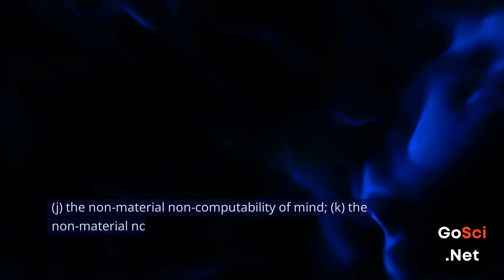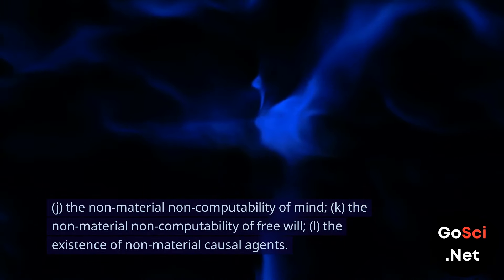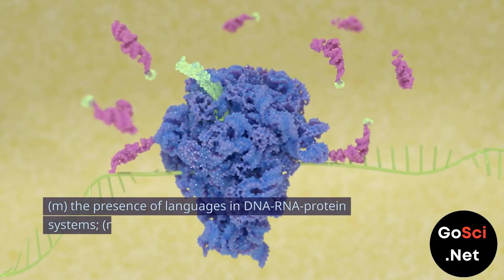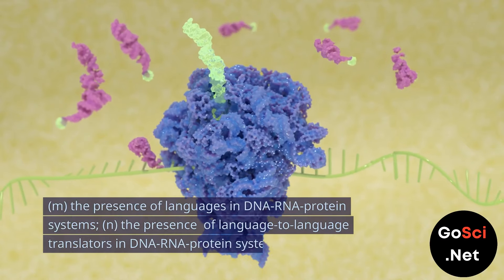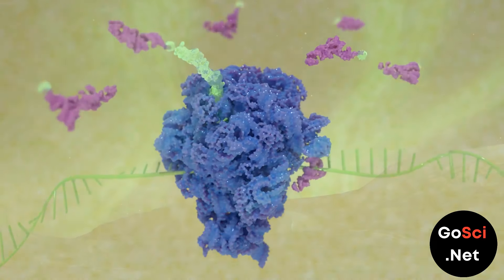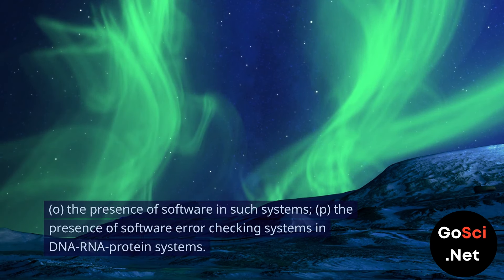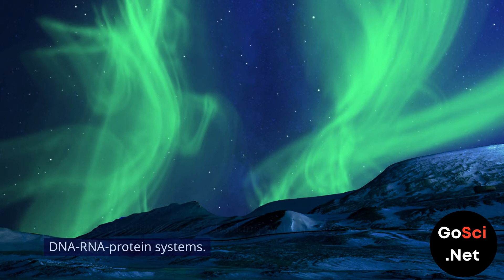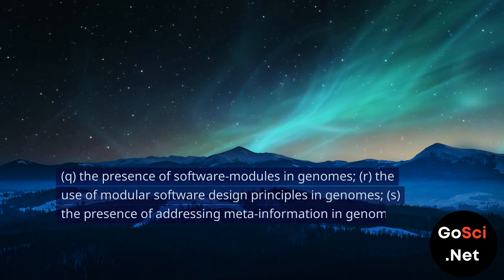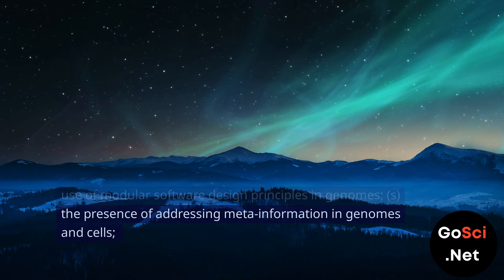j. The non-material non-computability of mind. k. The non-material non-computability of free will. l. The existence of non-material causal agents. m. The presence of languages in DNA-RNA protein systems. n. The presence of language-to-language translators in DNA-RNA protein systems. o. The presence of software in such systems. p. The presence of software error checking systems in DNA-RNA protein systems. q. The presence of software modules in genomes. r. The use of modular software design principles in genomes. s. The presence of addressing meta-information in genomes and cells.